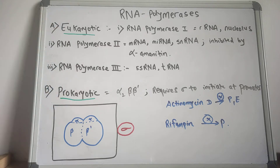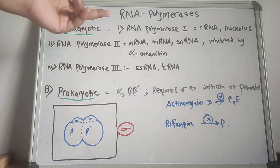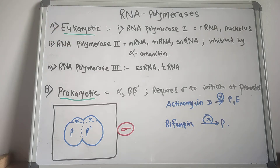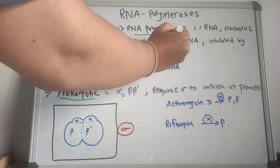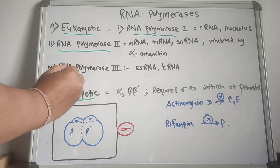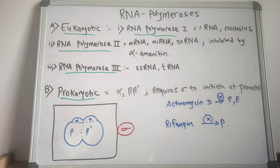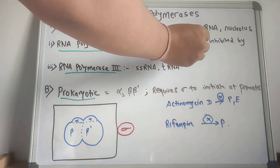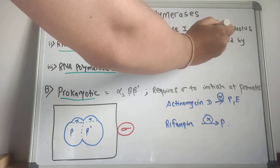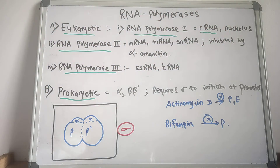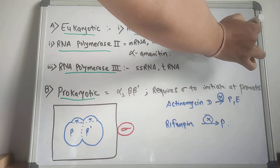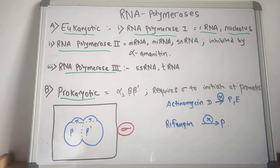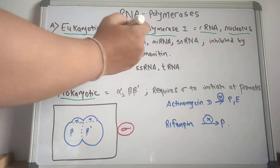In eukaryotic RNA polymerases, there are RNA polymerase 1, RNA polymerase 2, and RNA polymerase 3. RNA polymerase 1 makes the ribosomal RNA and is the most common type of RNA polymerase. It is present only in the nucleolus.